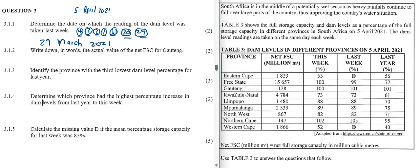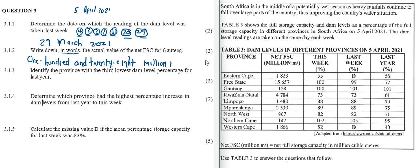3.1.2: write down in words the actual value of the net full storage capacity for Howq 10. We must write it in words. For Howq 10, the net full storage capacity is 128 — remember this is in million meters cubed. So we write it in full as one hundred and twenty-eight million meters cubed.